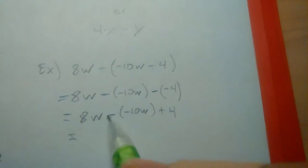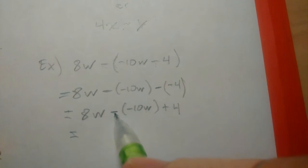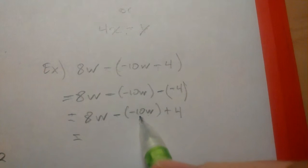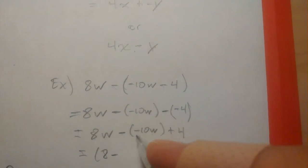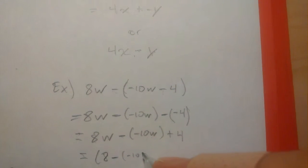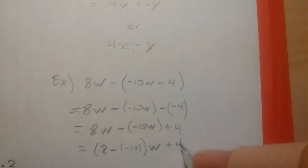So we have like terms, right? What we're going to do is perform that operation with the 8 and the negative 10. So here's what we have. We have 8 subtracting a negative 10w and then add 4.